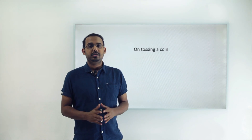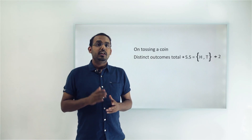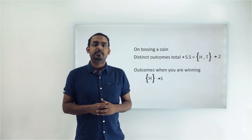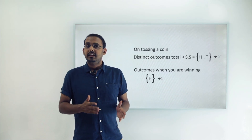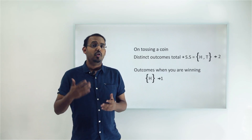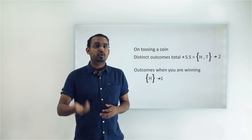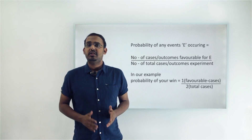When we toss a coin there are two different possible outcomes — heads or tails. Since your friend called tails, you win when you get heads. The number of favorable cases for you winning is 1, and the total number of possible outcomes when tossing a coin is 2. Using the definition of theoretical probability, the probability of you winning is 1 by 2 — a 50% chance.